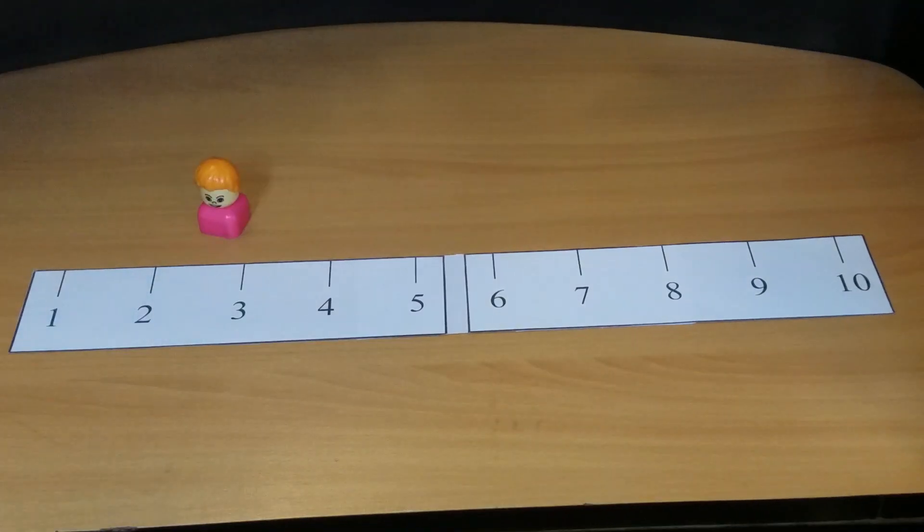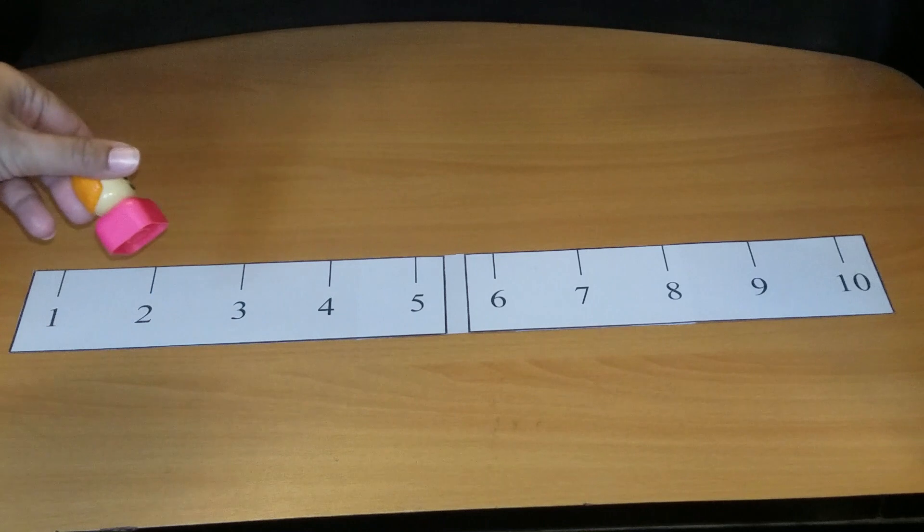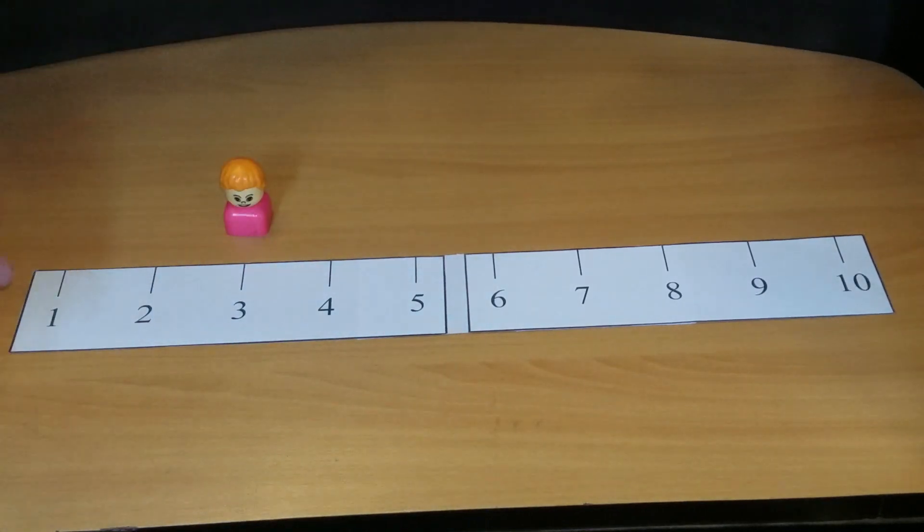Even mothers get very confused about how we are going to make our children learn these tables. So here you can see that I have kept a number line in front of you, it's one till ten, and here's a toy who will skip the numbers.